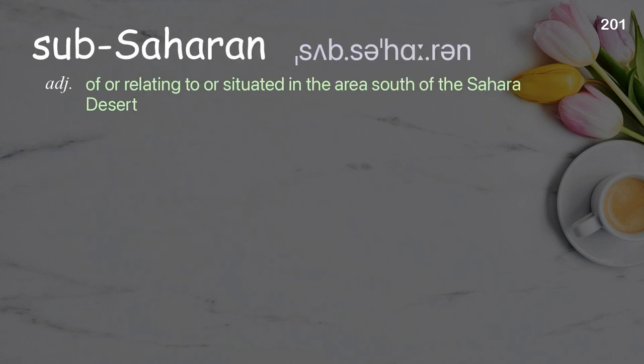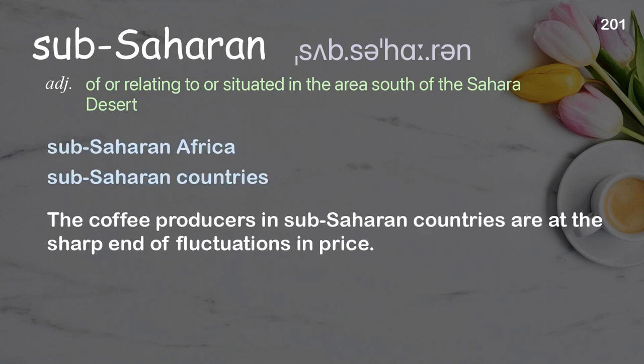Sub-Saharan: of or relating to or situated in the area south of the Sahara Desert. Examples: Sub-Saharan Africa; Sub-Saharan countries. The coffee producers in sub-Saharan countries are at the sharp end of fluctuations in price.